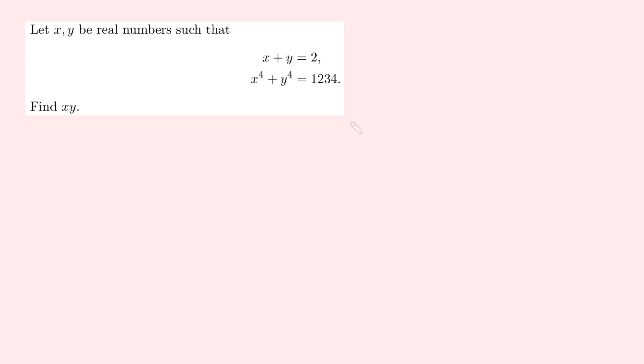Hi, thanks for joining me. Today I've got a stereotypical Olympiad-style problem. We have x and y real numbers with x plus y equaling 2 and x to the 4 plus y to the 4 equaling 1234. Our job is to find the product of x and y, so find xy.